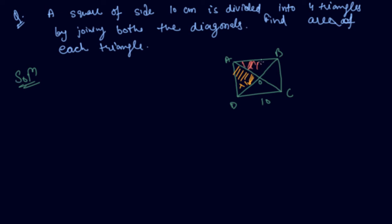This is second. And this is third. And this you can say is fourth one. So, these four triangles are of equal area. And I have to find out the area of each triangle.